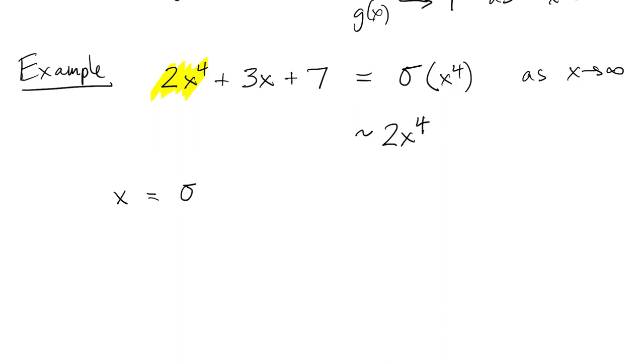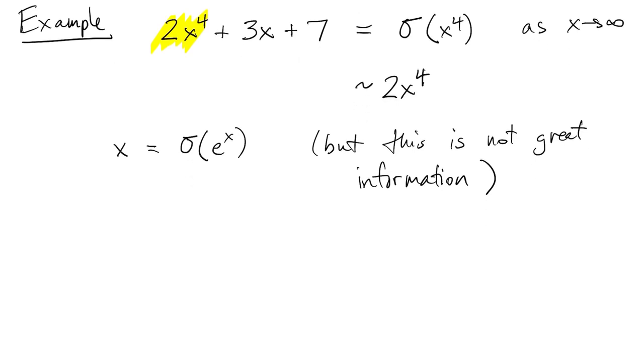Another example would be that x is O(e^x). Certainly that ratio is bounded, it goes to 0. But it's not very informative. Here's a more exotic example. Sine squared of x is O(1), because sine squared over 1 is less than or equal to 1. But it's not asymptotic to 1, because it has no limit as x goes to infinity.